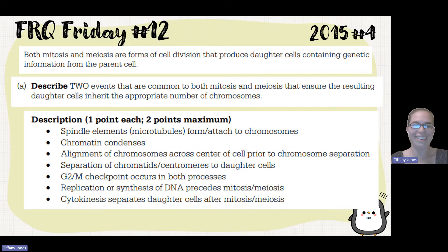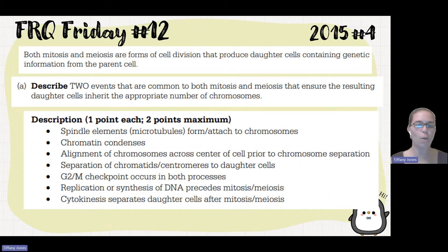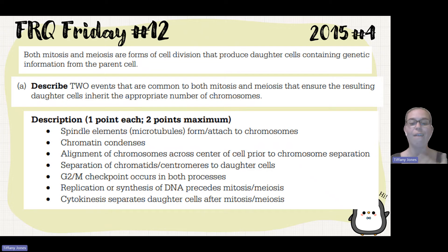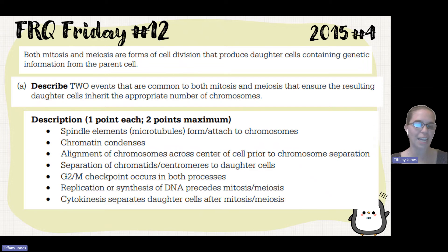You could also mention the G1 and G2 checkpoints, which take place at the end of interphase and ensure that DNA has been replicated with no major errors and is ready to divide. The M checkpoint ensures kinetochore microtubules are attached so chromosomes divide equally. DNA replication or synthesis must take place during interphase, before mitosis and meiosis. You could also mention cytokinesis — the division of the cytoplasm — which takes place after mitosis.